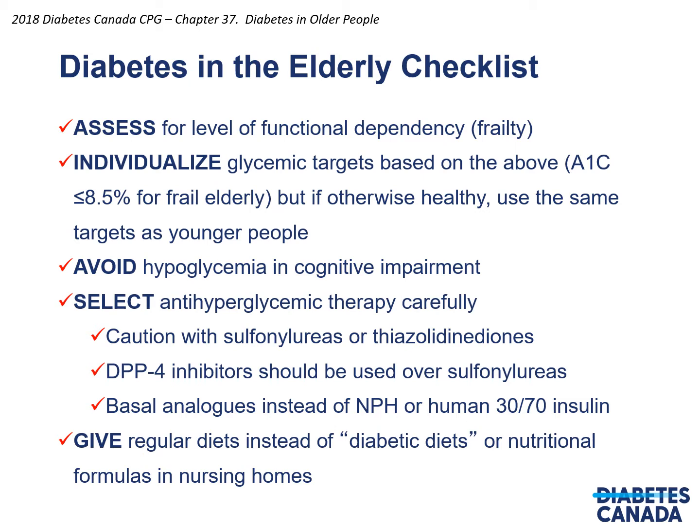Avoid hypoglycemia and cognitive impairment, as these patients tolerate it very badly. Select anti-hypoglycemic therapy carefully. Caution should be used with sulfonylureas or thiazolidinediones. DPP-4 inhibitors should be used over sulfonylureas. Basal analogs instead of NPH or human 30/70 should be used, and you should give regular diets instead of diabetic diets or nutritional formulas in nursing homes.